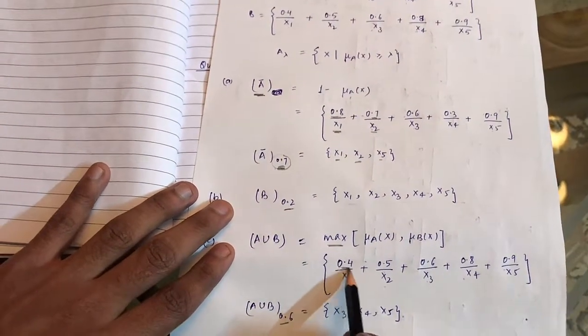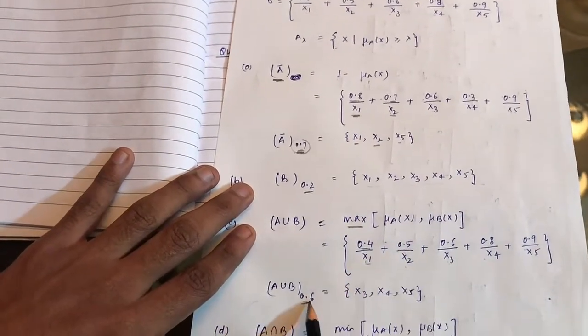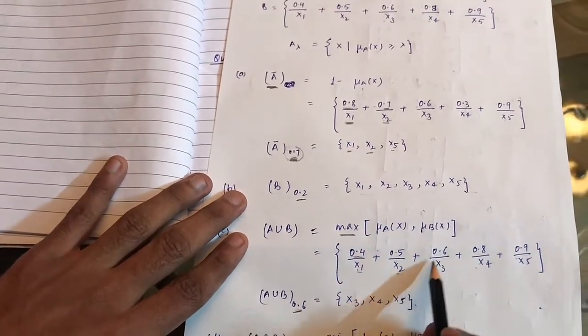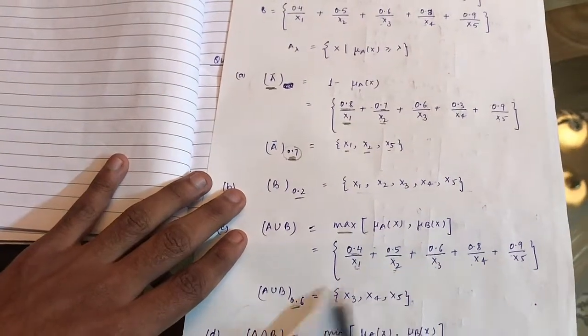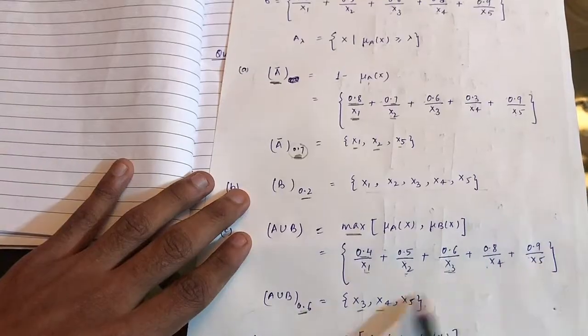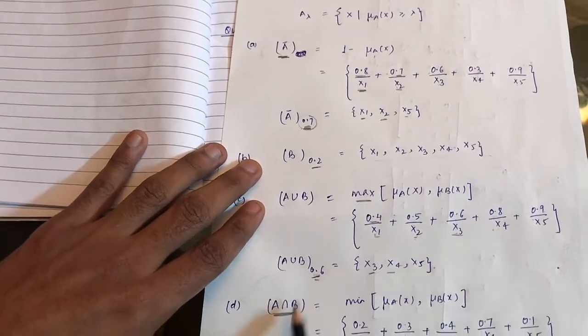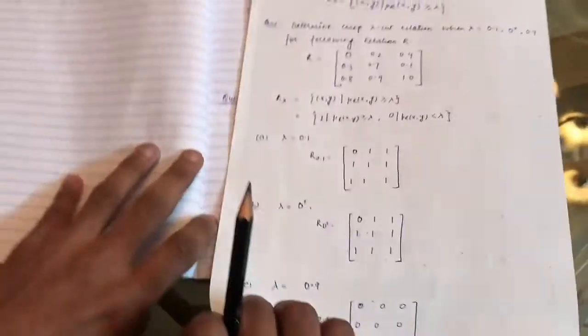Now we calculate for 0.6. So 0.4 is less than 0.6, so we have not taken x1. 0.5 is again less than 0.6, so we have not taken x2. But 0.6 equals 0.6, so x3 we have taken. 0.8 is greater than 0.6, so x4. 0.9 is greater than 0.6, so x5 we have taken. Similarly A intersection B you can do it yourself.